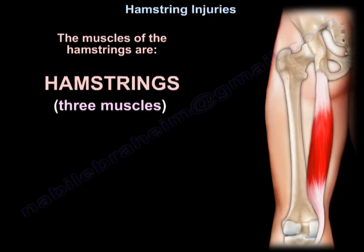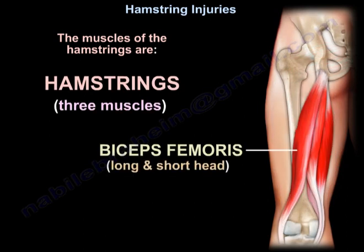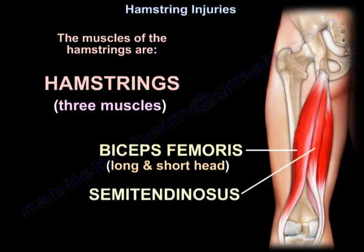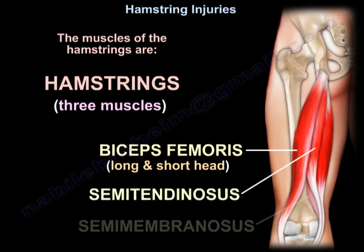The muscles of the hamstrings are the biceps femoris — long head and short head — the semitendinosus, and the semimembranosus.